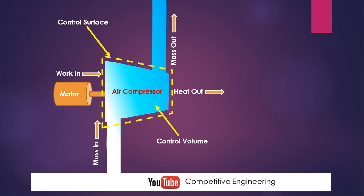Don't get confused between an open system and a control volume — both are the same. The concept of control volume applies only when there is mass interaction between system and surroundings, which means it is an open system. Control volume and control surface is simply a method of denoting a fixed volume of the system, and it is very useful for analyzing the system and deriving equations.